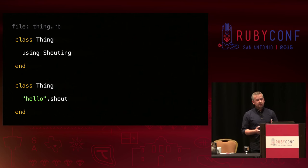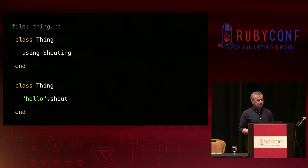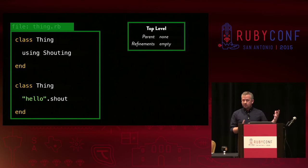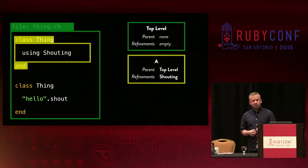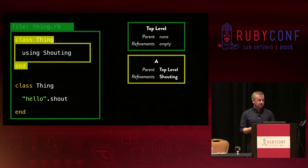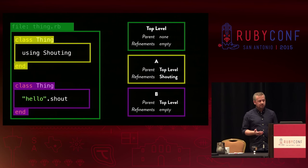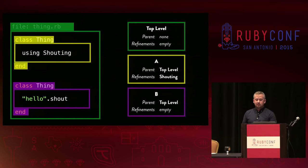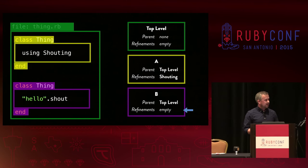Let's look at another example from earlier. We define a class and activate the refinement, and then later — either somewhere in the same file or in a different file — we reopen the class and try to use it. We've seen this doesn't work, but why? When we encounter the first class definition, Ruby gives us a new nested lexical scope — scope A — and it's within this scope that we activate the refinements. Once we reach the end of the class definition, we return to the top level lexical scope. But when we reopen the class, Ruby creates a new nested lexical scope — distinct from the previous one, call it B — where the refinements are no longer active.